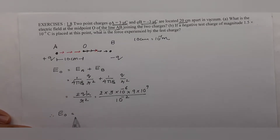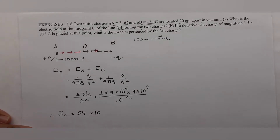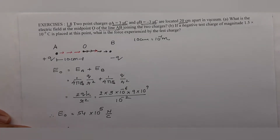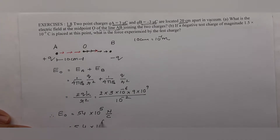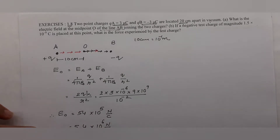Eo = 54 × 10⁻² × 10⁹ × 10⁻⁶ = 54 × 10¹ = 5.4 × 10⁻² ... simplifying: 5.4 × 10⁶ newton per coulomb. So the electric field at the midpoint O is 5.4 × 10⁶ N/C.